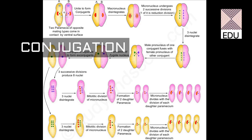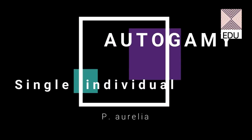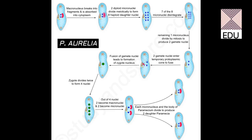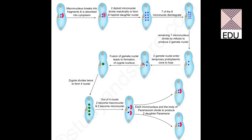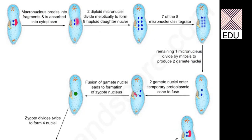Since we had two ex-conjugants, eight paramecia are formed as a result of conjugation — two parent conjugants giving rise to eight daughter paramecia. The third type of reproductive process is autogamy, found in Paramecium aurelia. Note that this is not found in Paramecium caudatum. Paramecium aurelia has two micronuclei and one macronucleus. The process involves the same initial steps as conjugation: first the macronucleus disintegrates, and the two micronuclei divide by meiosis.